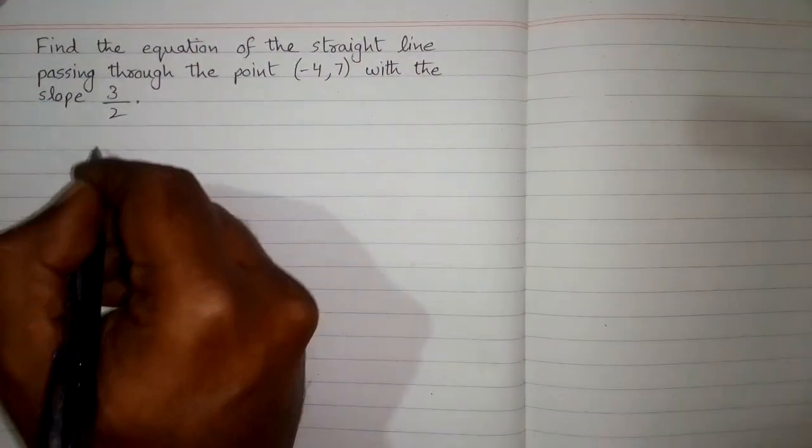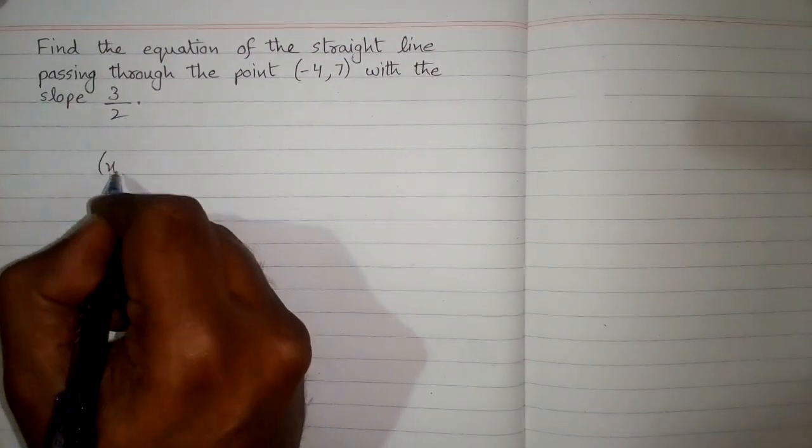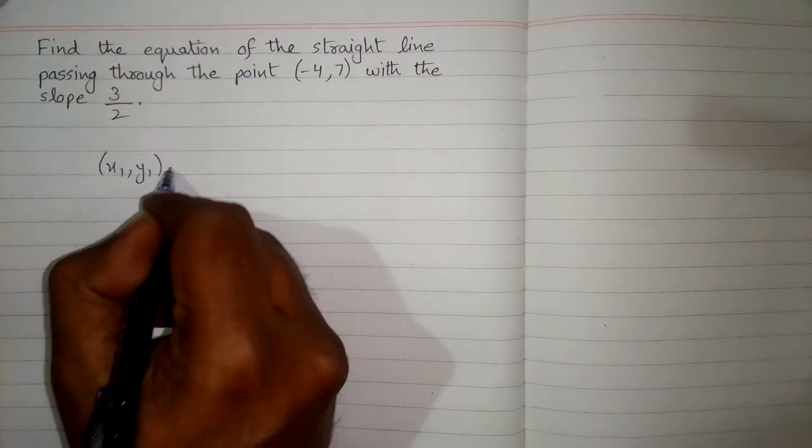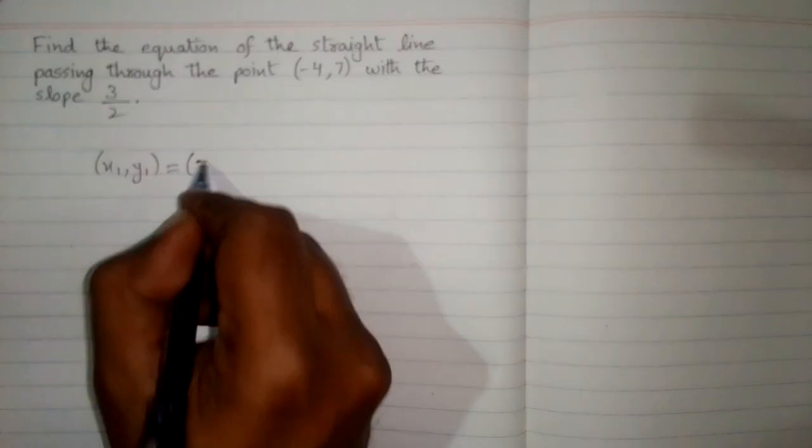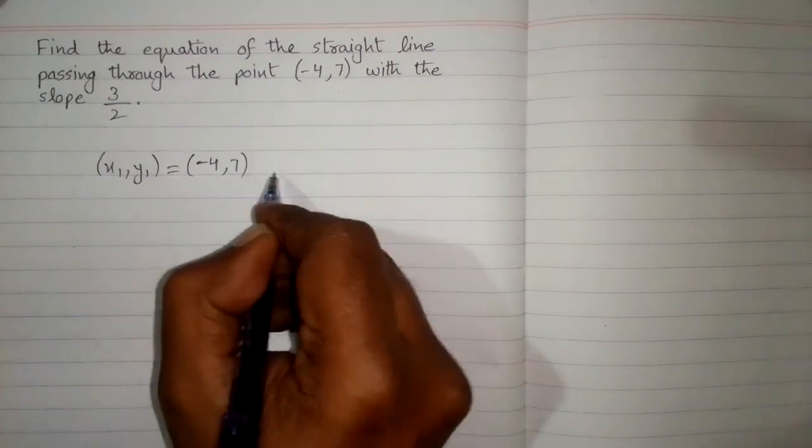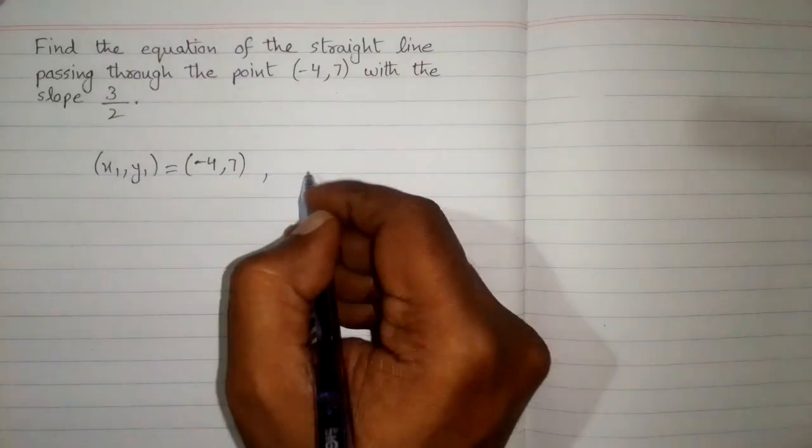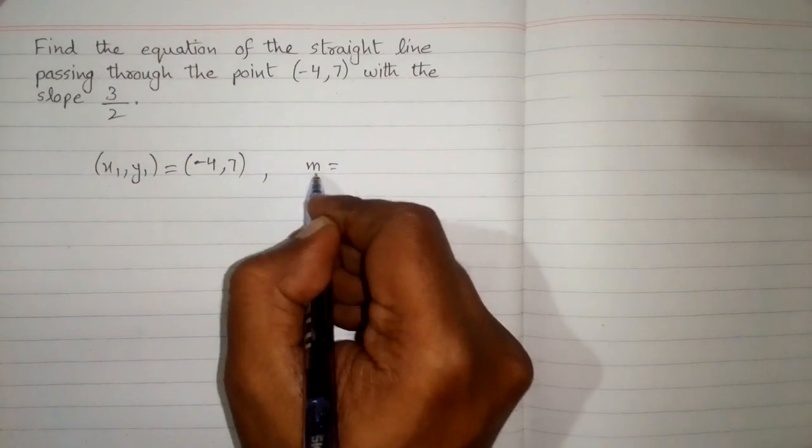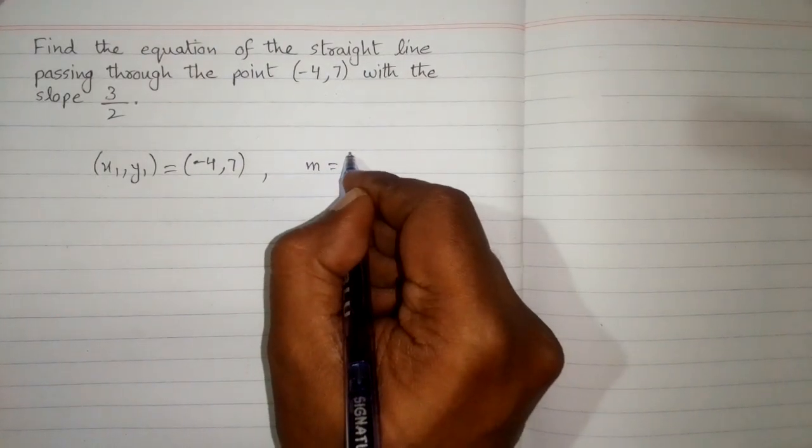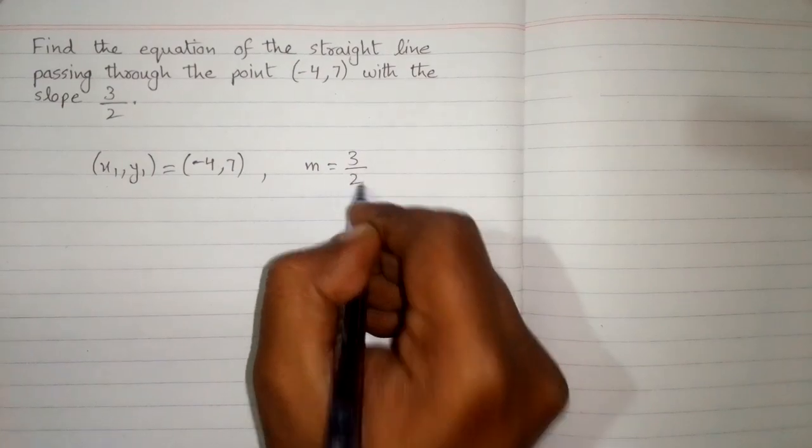So suppose this point is x1 y1, so x1 y1 is equal to minus 4 comma 7 and the slope, suppose slope is m, so m is equal to 3 upon 2.